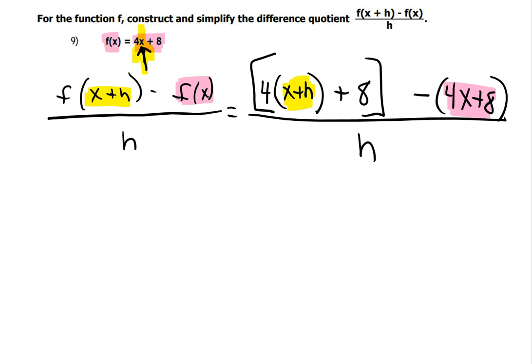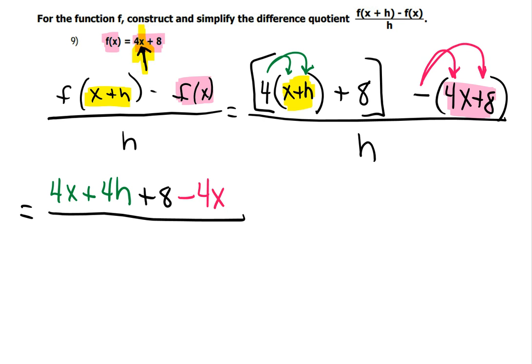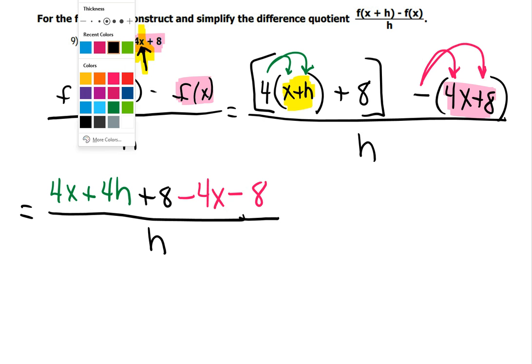There you go. And now we have to simplify this mess. So let's see, I'm going to start by distributing the 4 here, and that's going to give me in my numerator 4x plus 4h. I'll still have the plus 8 here, and I really don't need the grouping symbols. And then back here I'll distribute the minus sign, so that's going to be a minus 4x minus 8, all over h.